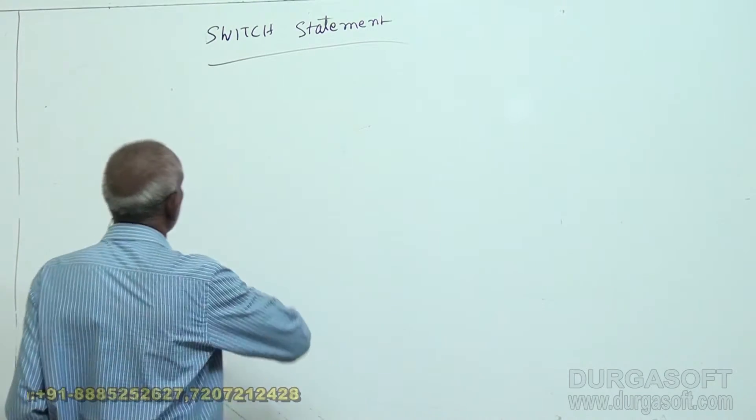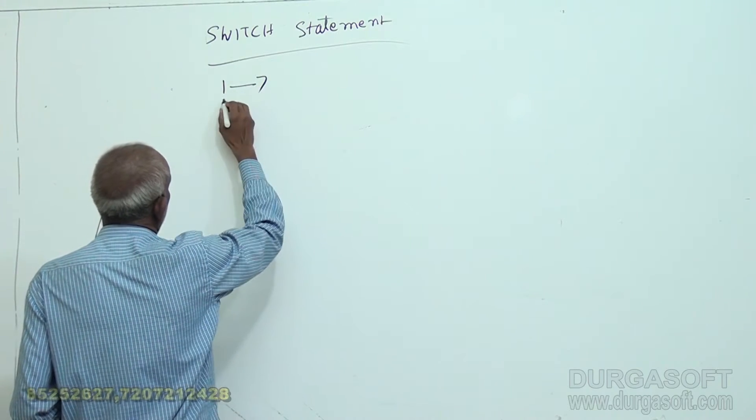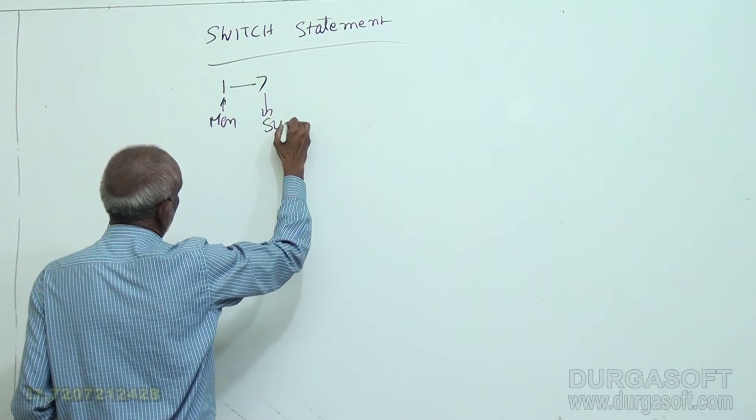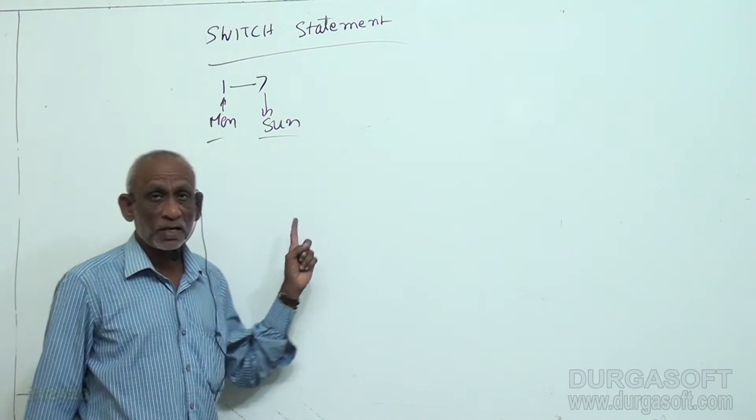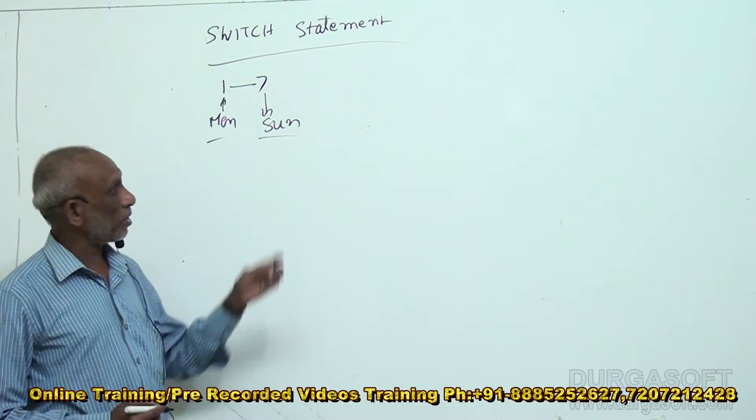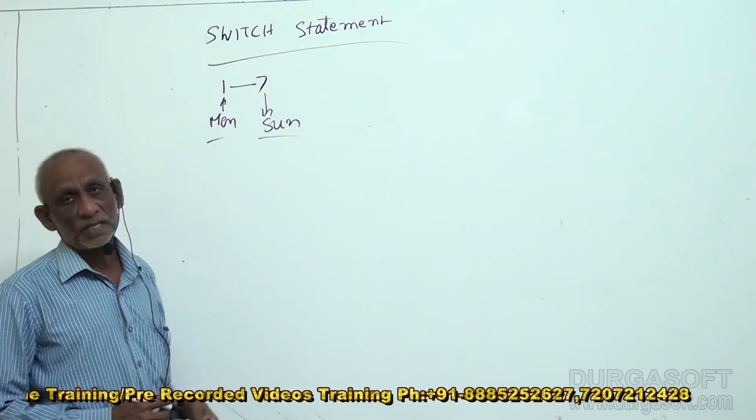So, we have 1 to 7. 1 means Monday, 7 means Sunday. They are the codes. So, let us ask the user to enter day code, check it and display the name of the day depending on what code it is. 1 is Monday, 2 is Tuesday, like that, 7 is Sunday.